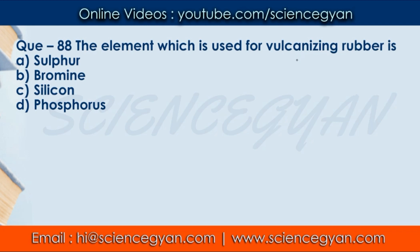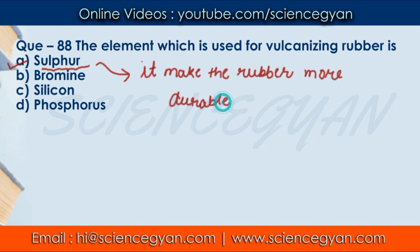Question number 88: The element which is used for vulcanizing rubber — which element is used for rubber vulcanization? The correct answer is A — sulfur. Sulfur is used for cross-linking. In the vulcanization process, rubber becomes more durable by using sulfur.